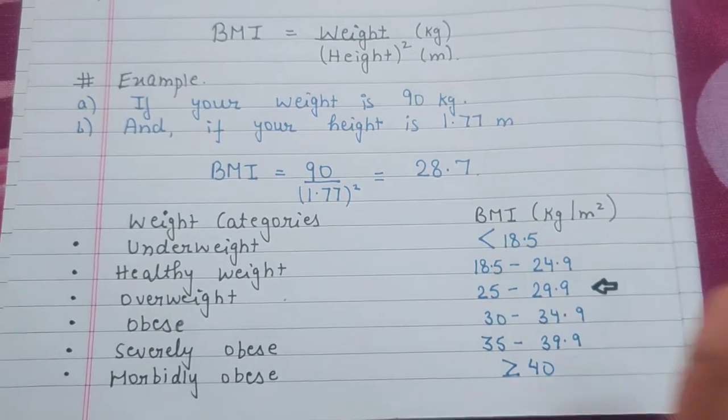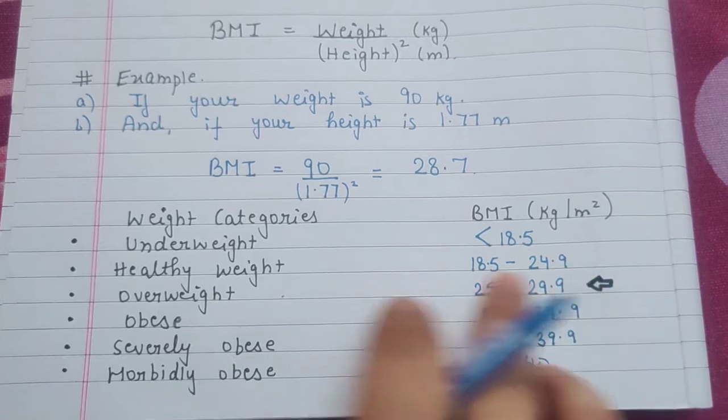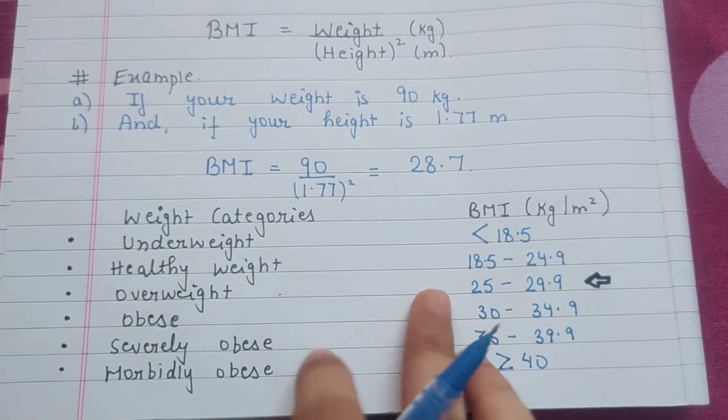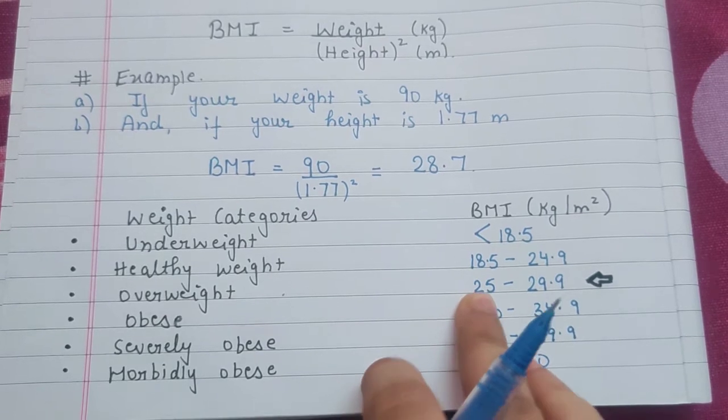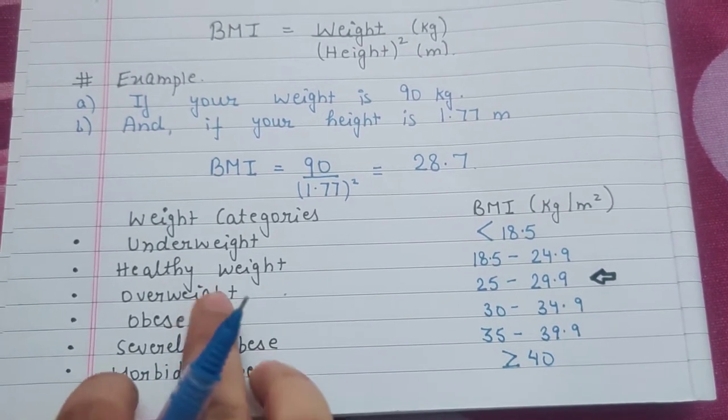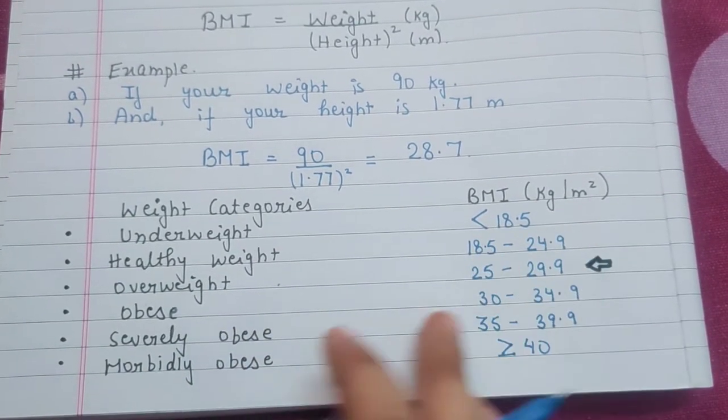If you are 18.5 to 24.9, then you are healthy weight - your weight is perfect. If you are 25 to 29.9, then you are overweight. You have gained weight, so you need to control it.